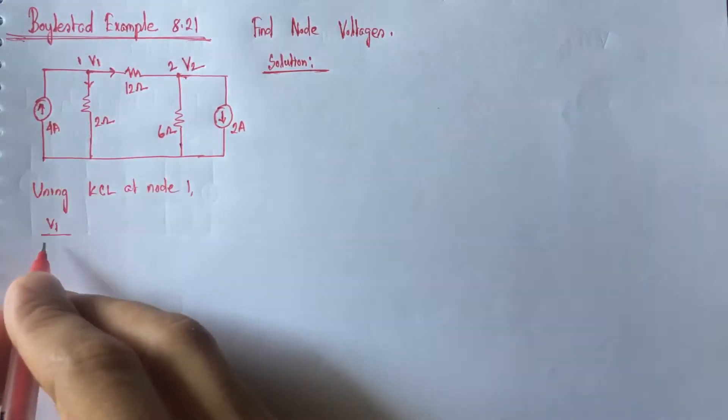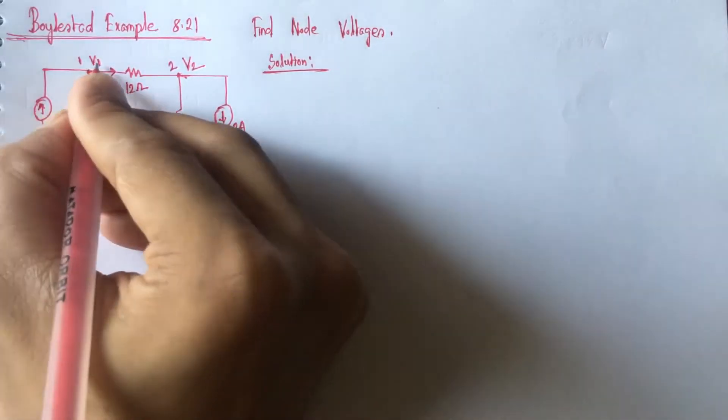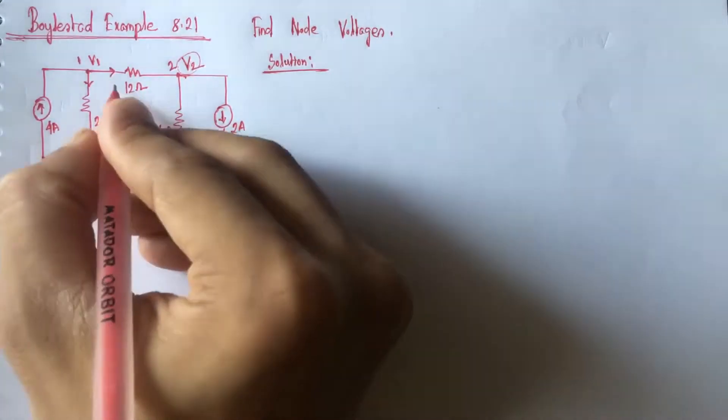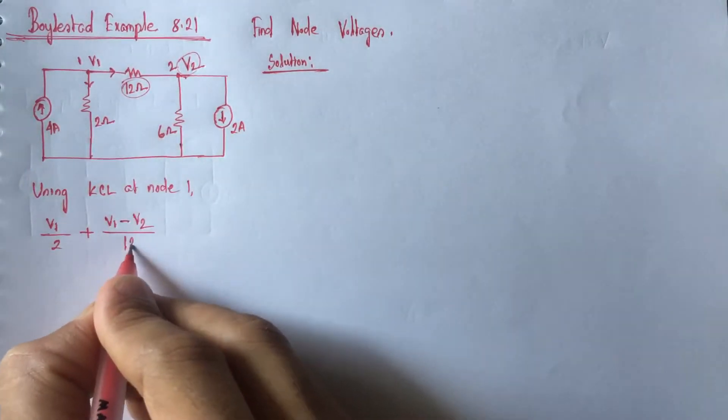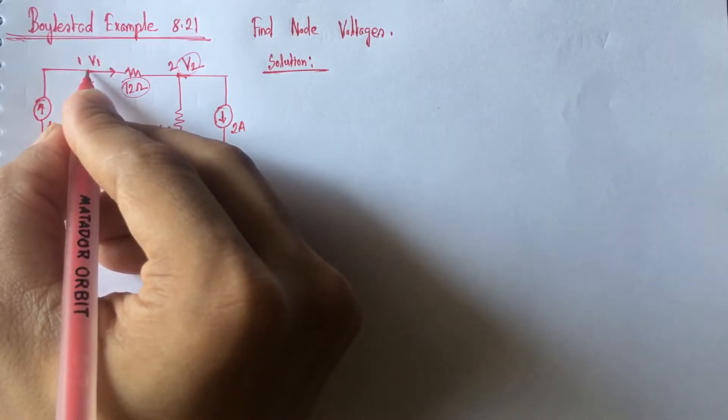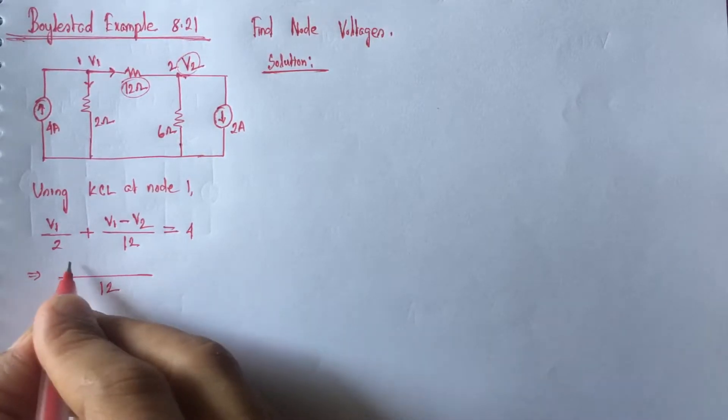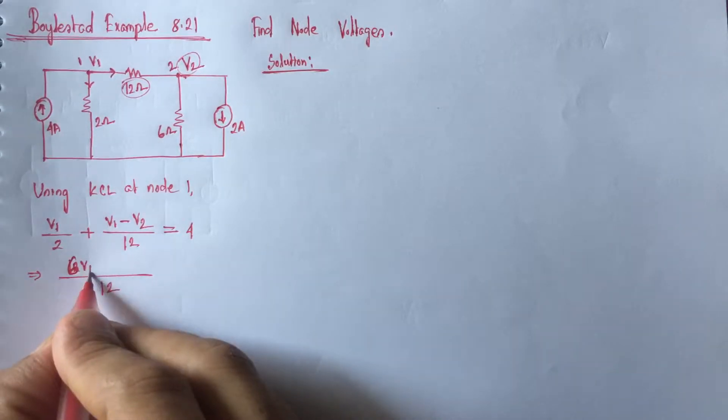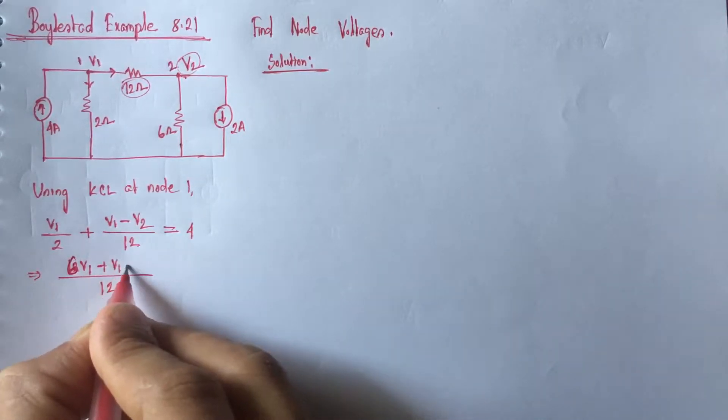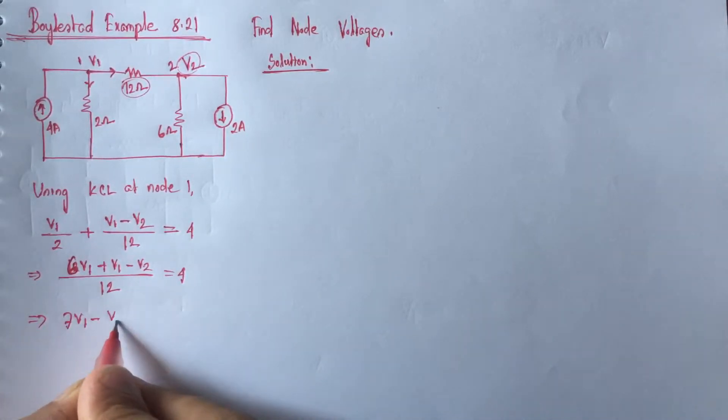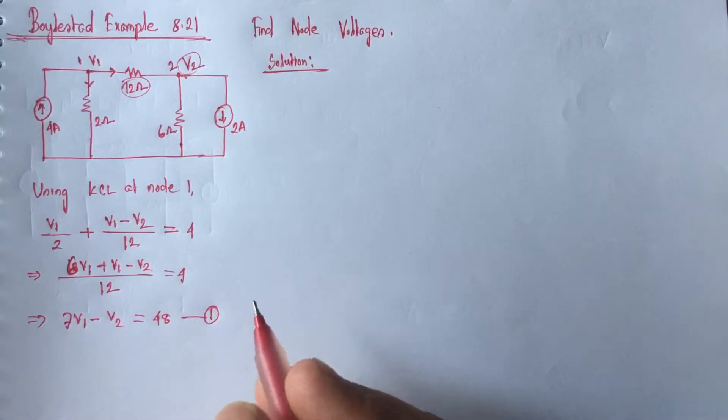V1 by 2 plus V1 minus this voltage V2 divided by this resistance 12 will be equal to current entering at this node. So, this is 4. Now, simplifying the equation, 6V1 plus V1 minus V2 equals 4, that is 7V1 minus V2 equals 48. This is equation 1.